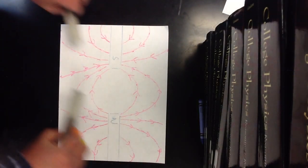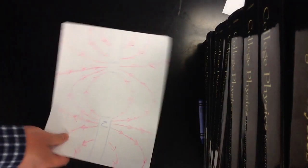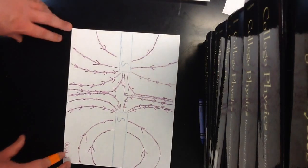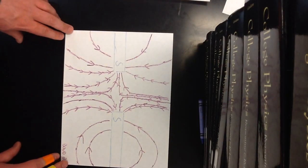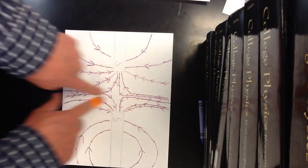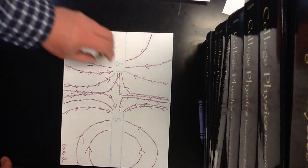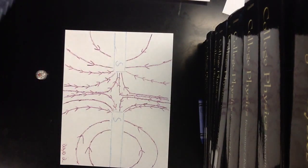So the last one I wanted to show was this one, which looks pretty messed up. But all of this jumbling up here in the middle has to do with the fact that magnetic field lines do not cross each other. So as the compass was in the middle here,